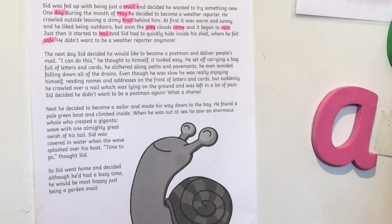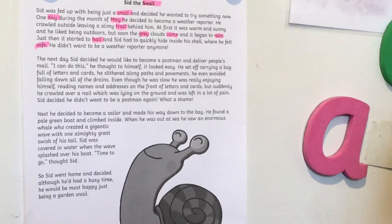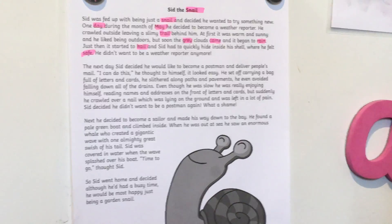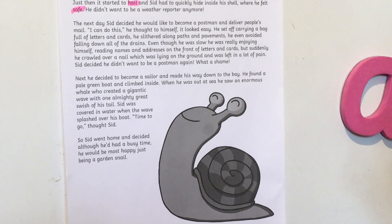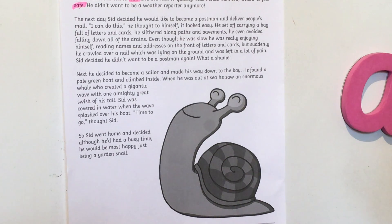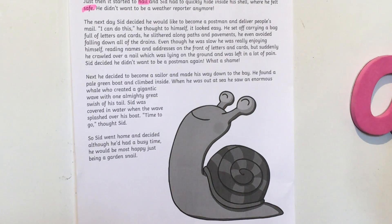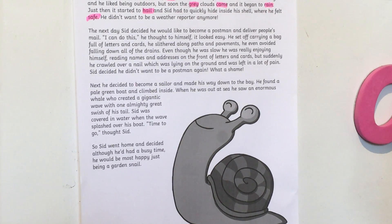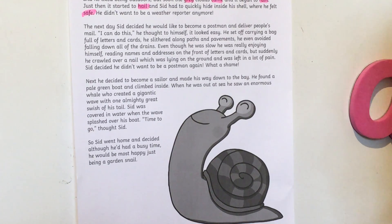Even though he was slow he was really enjoying himself reading names and addresses on the front of letters and cards. But suddenly he crawled over a nail which was lying on the ground and was left in a lot of pain. Sid decided he didn't want to be a postman again. What a shame. Next he decided to become a sailor and made his way down to the bay. He found a pale green boat and climbed inside. When he was out at sea he saw an enormous whale who created a gigantic wave with one almighty swish of his tail. Sid was covered in water when the wave splashed over his boat. Hmm, time to go, thought Sid. So Sid went home and decided although he'd had a busy time he would be most happy just being a garden snail.